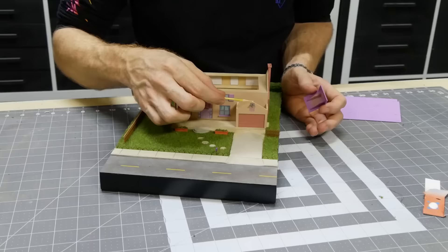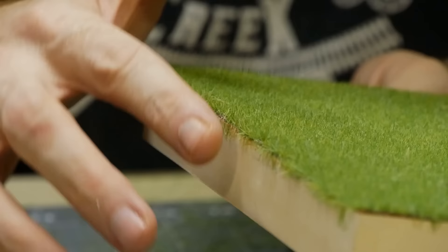Something I didn't show last time was bending the grass fibers up along the edge. You want to do this before the glue dries.